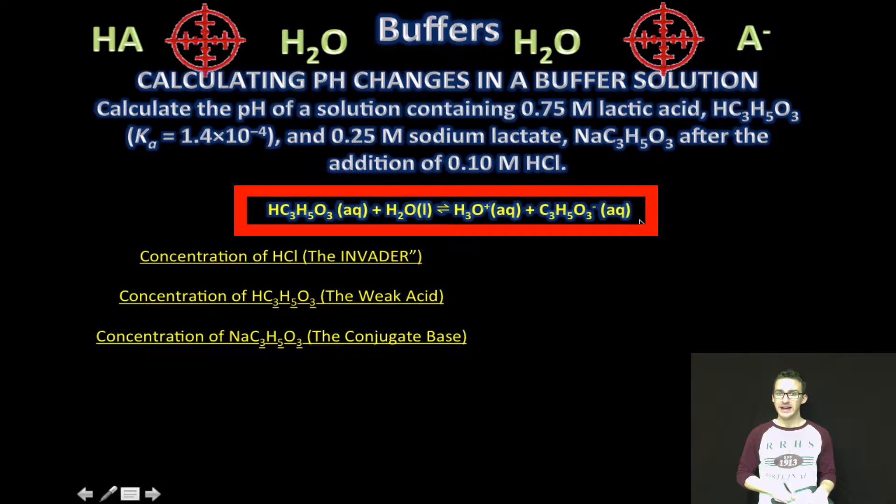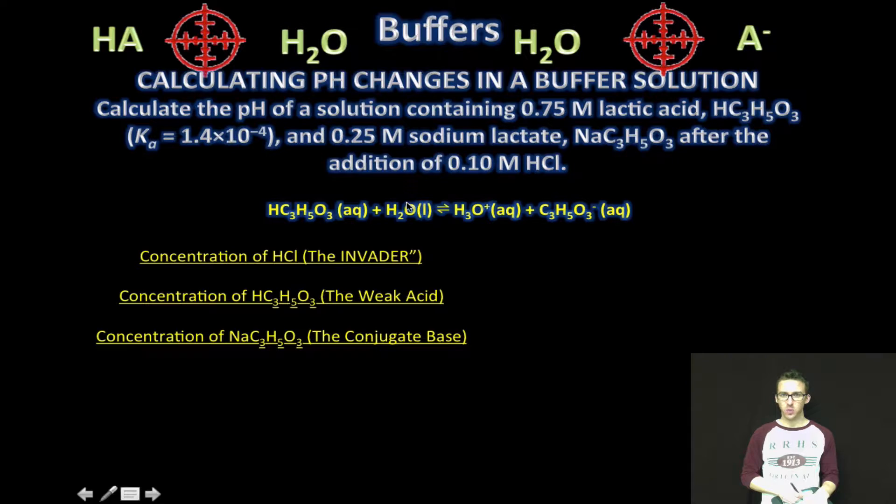First thing we want to do is write out the equation that represents this buffer system. Our lactic acid reacting with water to form hydronium ion and the lactate ion. Recognize if this were just a weak acid solution, there'd be hardly any of this lactate ion in solution because it's a weak acid.